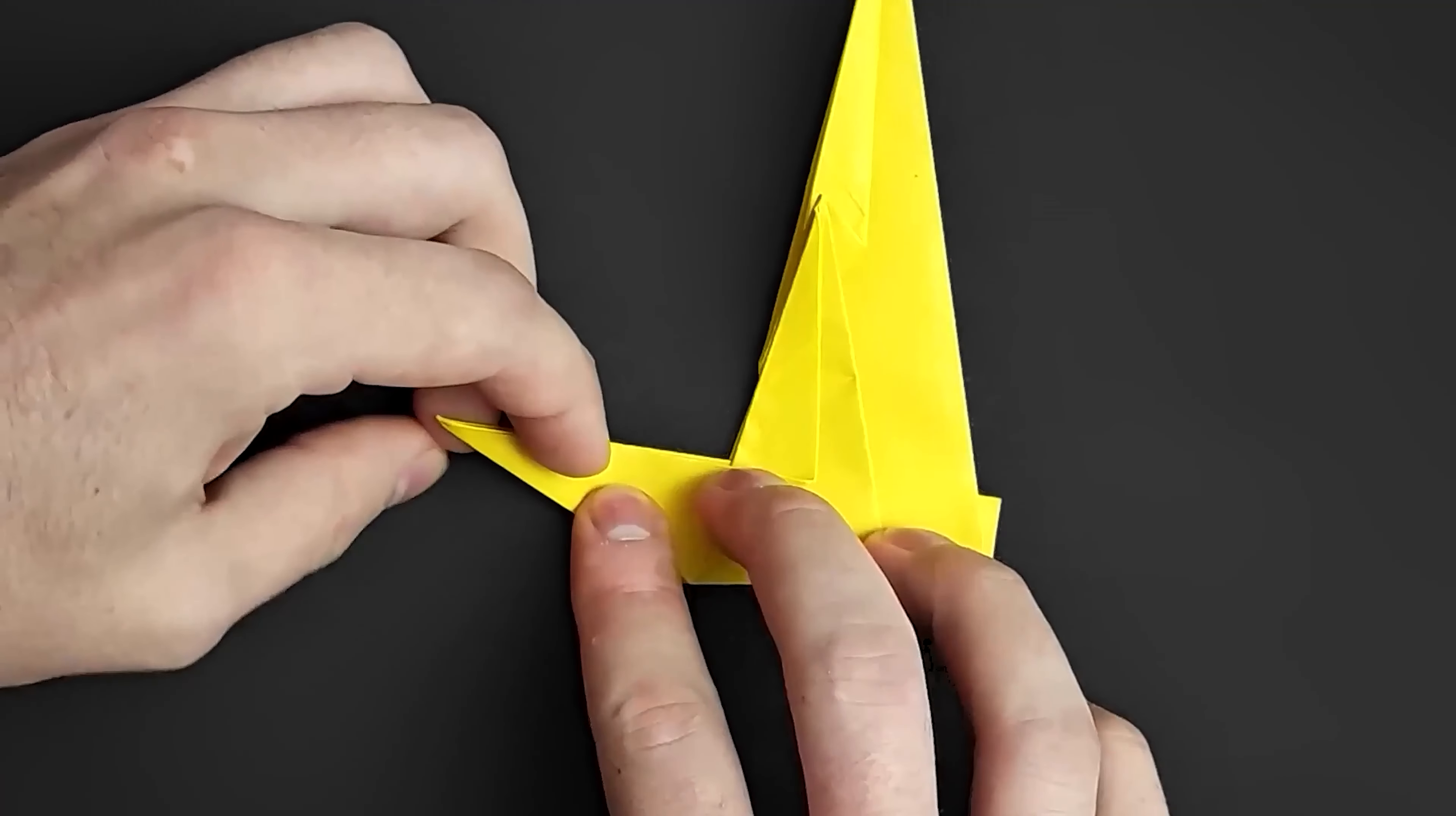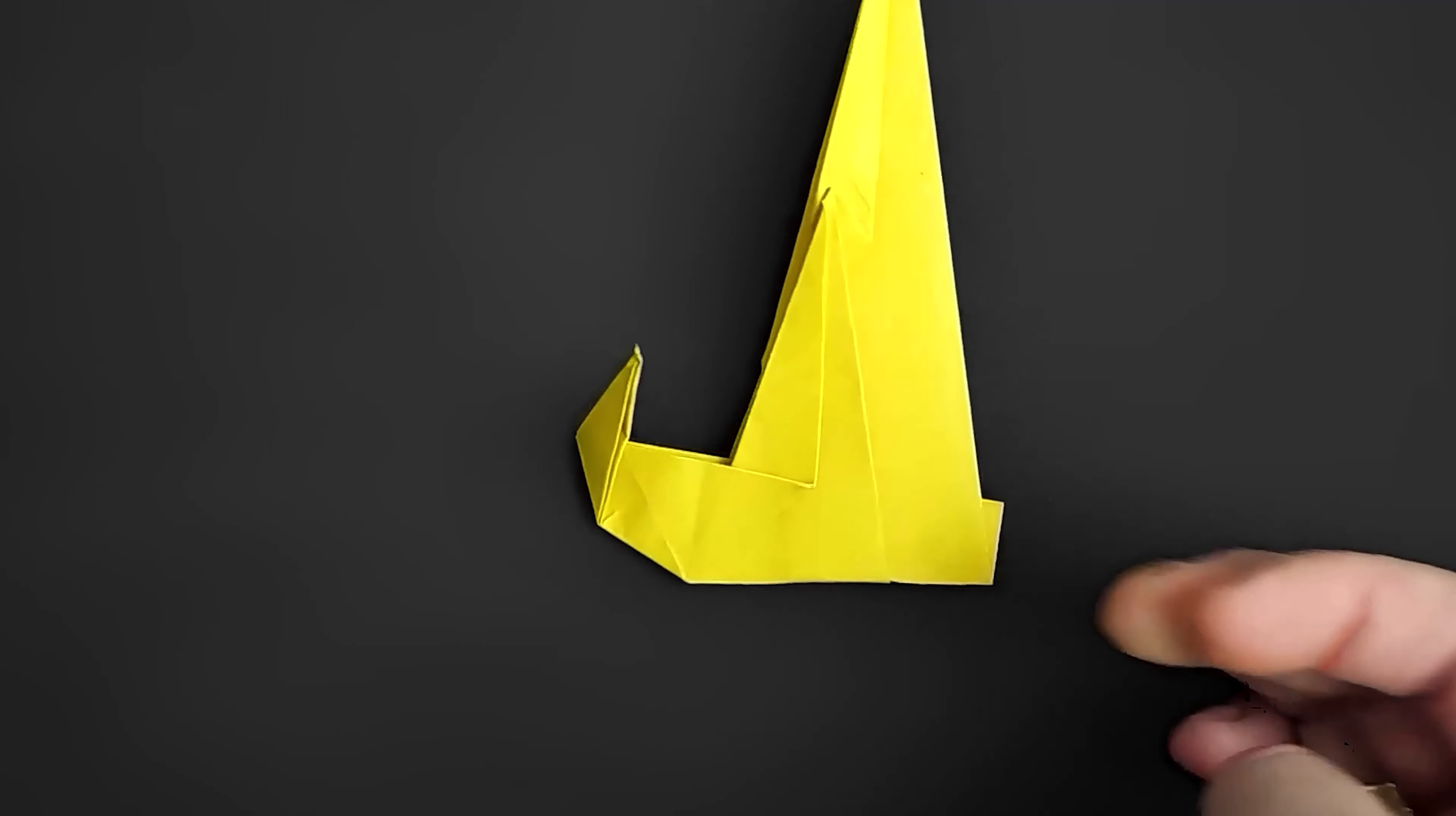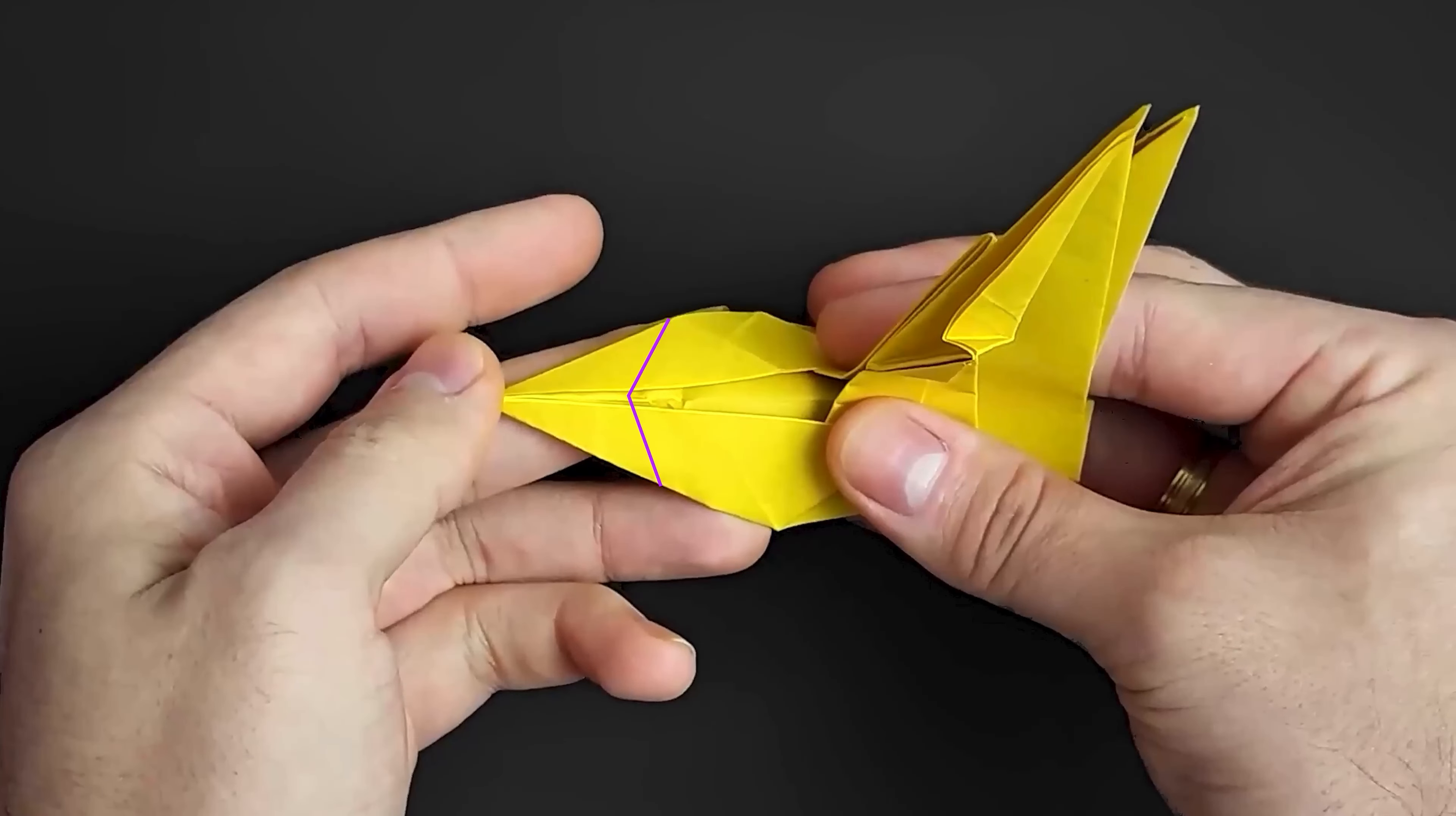Now to make the head details, I recommend you first fold a bit of the paper just to make a mark. Then we unfold it, open this tip, and open the middle layers. And then reverse fold using the lines we just made.